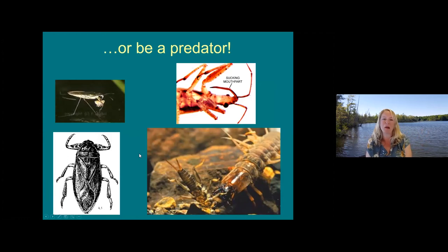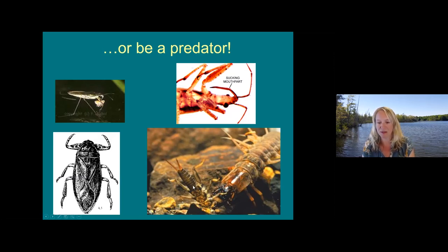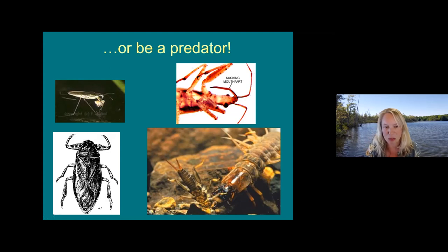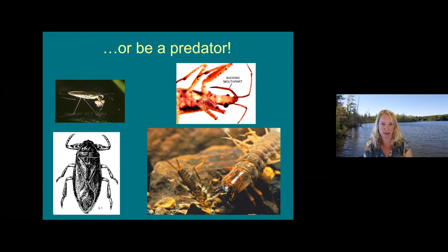And of course, some are predators. I do have a soft spot for the helgramite — a very efficient predator. This one has the head of a stonefly in its mandibles. They are very effective at preying on smaller invertebrates. Water striders are predators as well — that's a type of true bug in the order Hemiptera. They have a sucking mouthpart they use to pierce their prey and suck the juices out. The toe biter is another true bug that will hunt smaller invertebrates for food in the stream bottom.